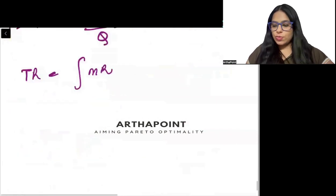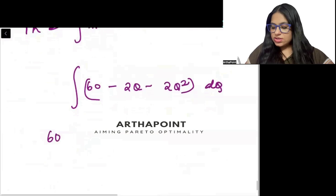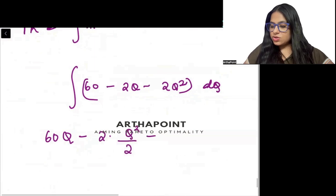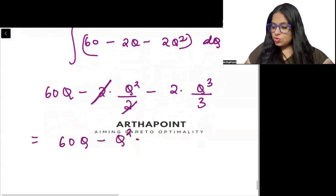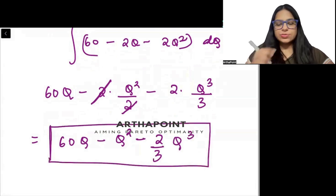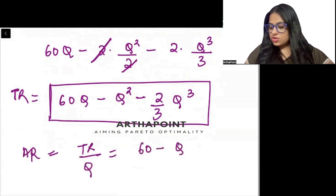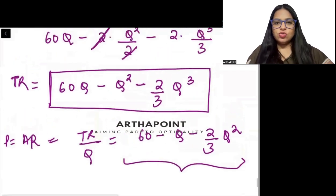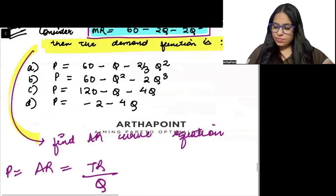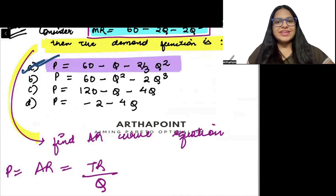Marginal revenue is 60 minus 2q minus 2q square. So integrate 60 minus 2q minus 2q square dq. Integrate this. What will you get? 60q minus 2. Integration of q will be q square by 2 minus 2. Integration of q square will be q cube by 3. So you will get 60q minus q square minus 2 by 3 q cube. This will be your total revenue beta. What will be your average revenue? Total revenue divided by quantity. 60 minus q minus 2 by 3 q square. This is nothing but your price. So this will be your demand function. 60 minus q minus 2 by 3 q square. That means A. This will be the right answer to this question.